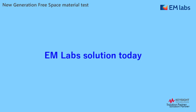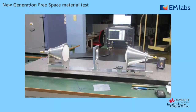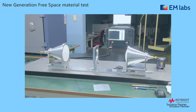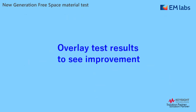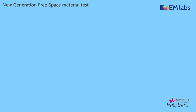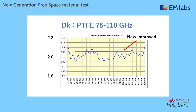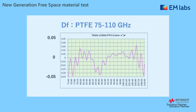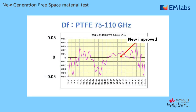Now about our solution today. It's very simple — only 15 kg, so you can move it by yourself. Performance has improved a lot. I'm going to overlay the test result to show that. Now you can say DK is 2.06, and the DF value is much less than 0.01. A lot of improvement.